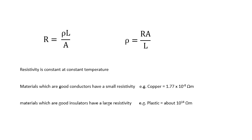Materials which are good insulators have a large resistivity. There's lots of different types of plastic, but you're talking about 10 to the 14 ohm meters. Large resistivity: insulators. Small resistivity: conductors.